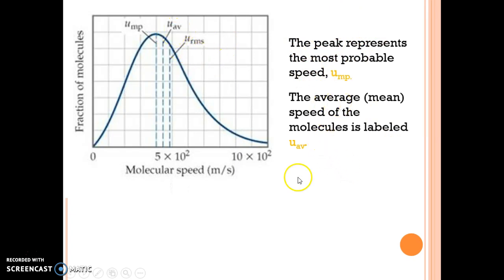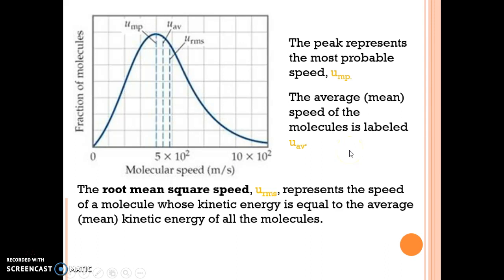The AV represents the average speed of the molecules. And then the third idea is what we refer to as the root mean square speed, RMS.